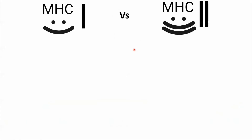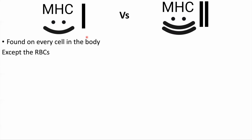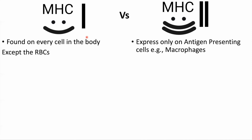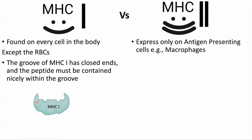To summarize, here is a short comparison between MHC class 1 and MHC class 2. MHC class 1 is expressed on every nucleated cell in the body except RBCs, while MHC class 2 is expressed only by antigen-presenting cells like macrophages. In MHC class 1, the groove has closed ends, as shown in this cartoon, and the peptide must be contained within the groove.